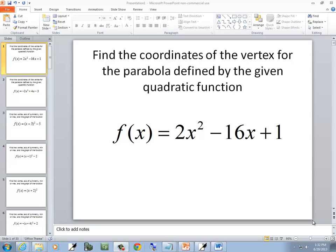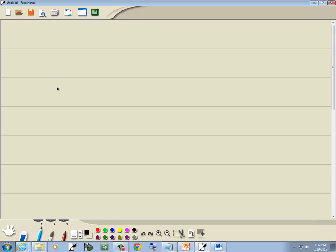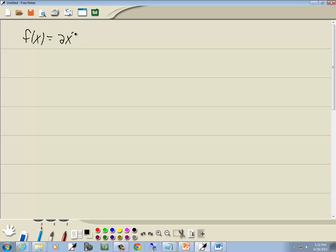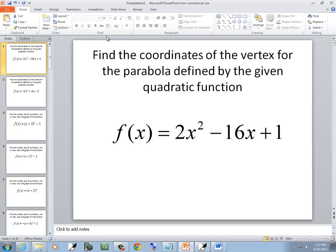In this problem we want to find the coordinates of the vertex for the parabola defined by the given quadratic function. So we got f(x) = 2x² - 16x + 1.